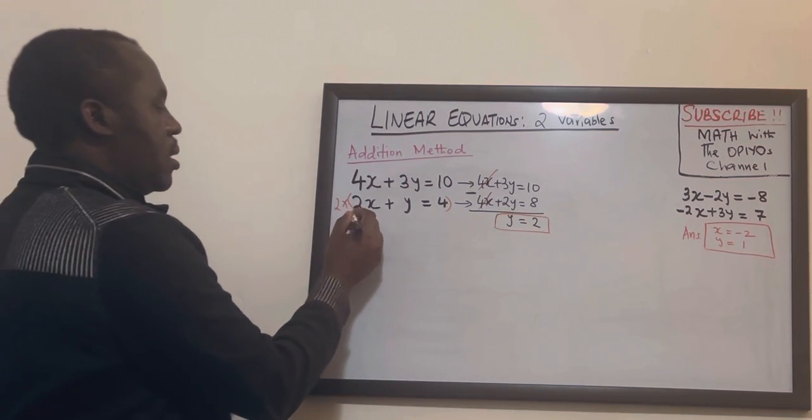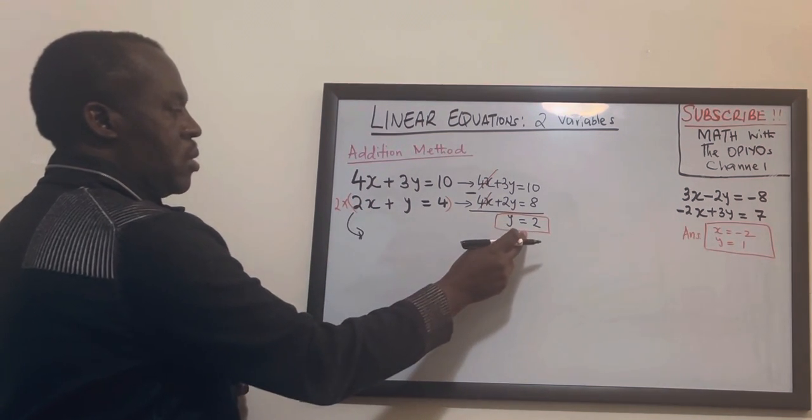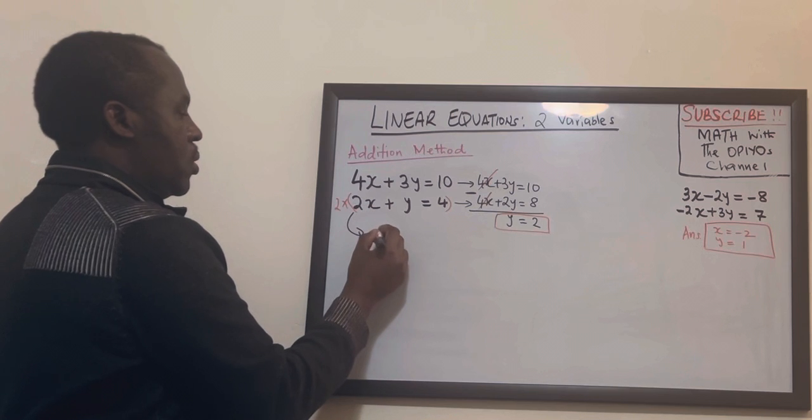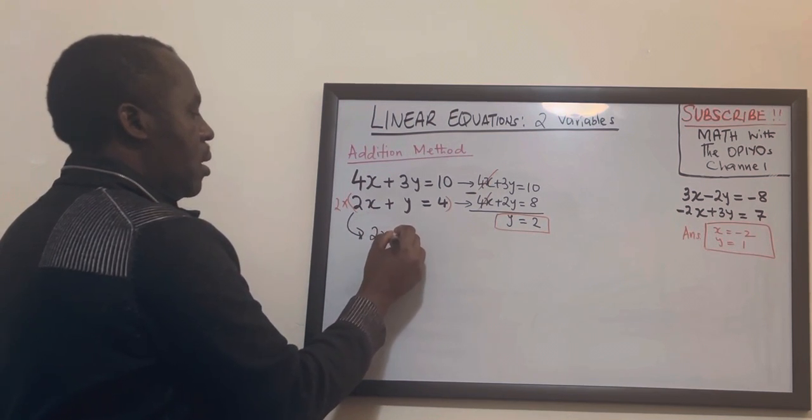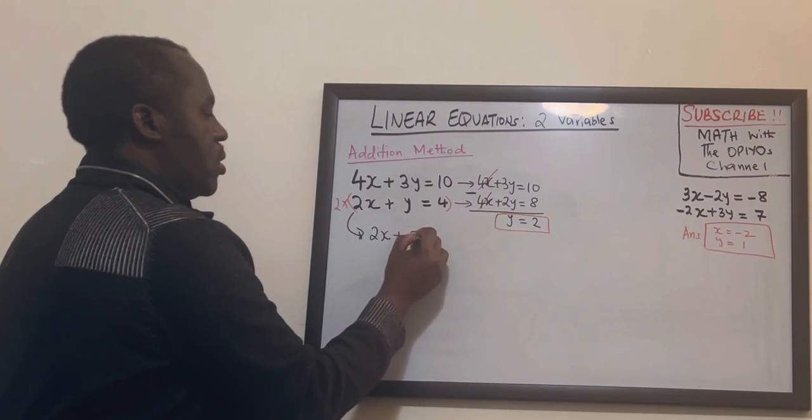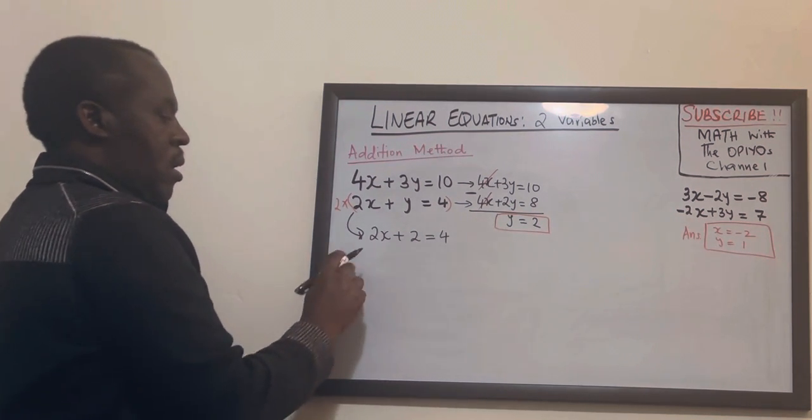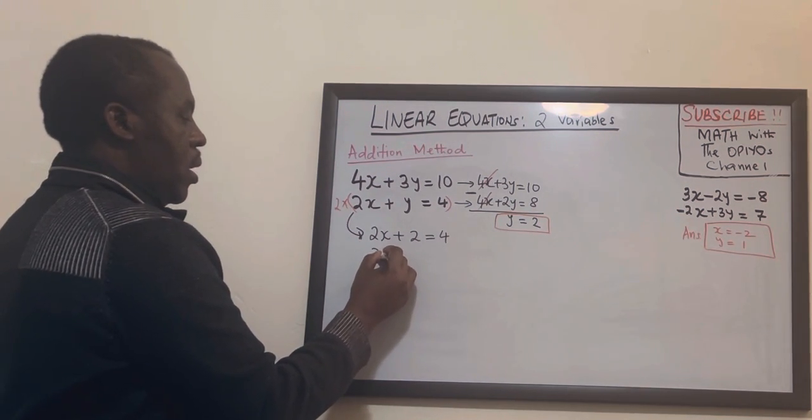So in this case I'm going to take 2x plus y equals 4. So I'm going to substitute where there's y I put 2. So here I'll have 2x plus 2 equals 4.